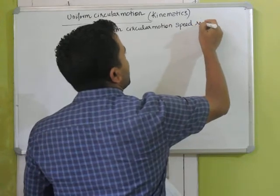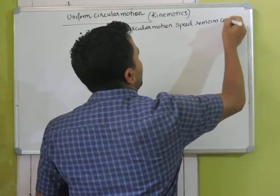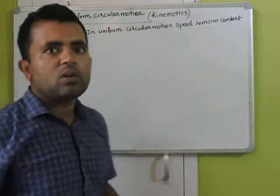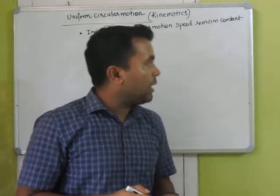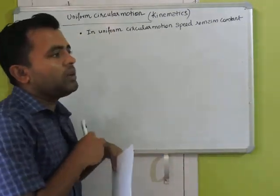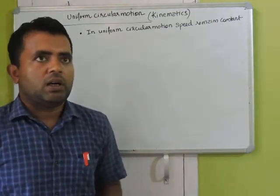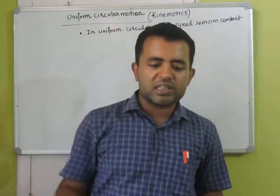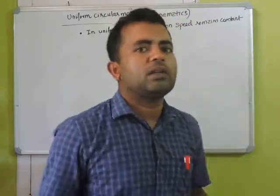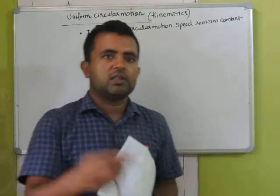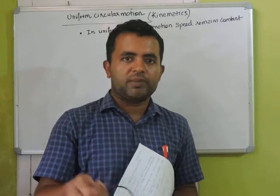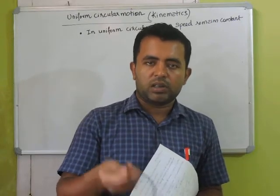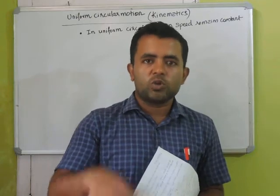In uniform circular motion, as the name says, speed remains constant and it is describing a circle. Now if you take an example of uniform circular motion, the thing has to move with constant speed. I am describing a circle in the XY plane — this is called vertical circular motion. If it slows down or speeds up, that is non-uniform.